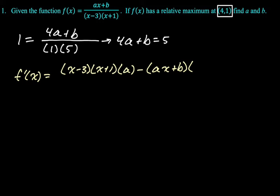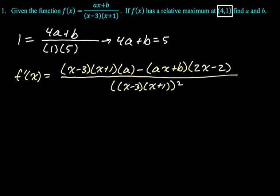To find the derivative of the bottom, I'm going to expand the bottom. So I'm going to expand in my head and get x² - 2x - 3. The derivative of x² - 2x - 3 is 2x - 2. So this is the derivative of the bottom. And then all over the denominator squared.